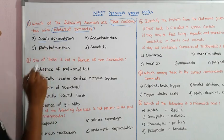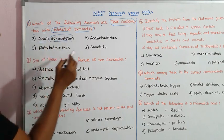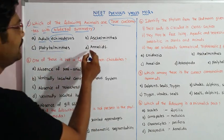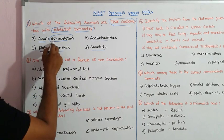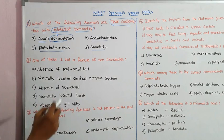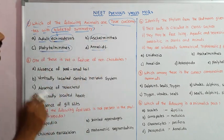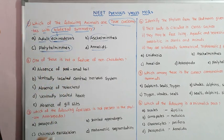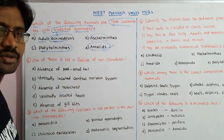Going through the options, we look at Aschelminthes, then Platyhelminthes, and then Annelids. In Annelids, we have bilateral symmetry. We also find radial symmetry in some phyla.